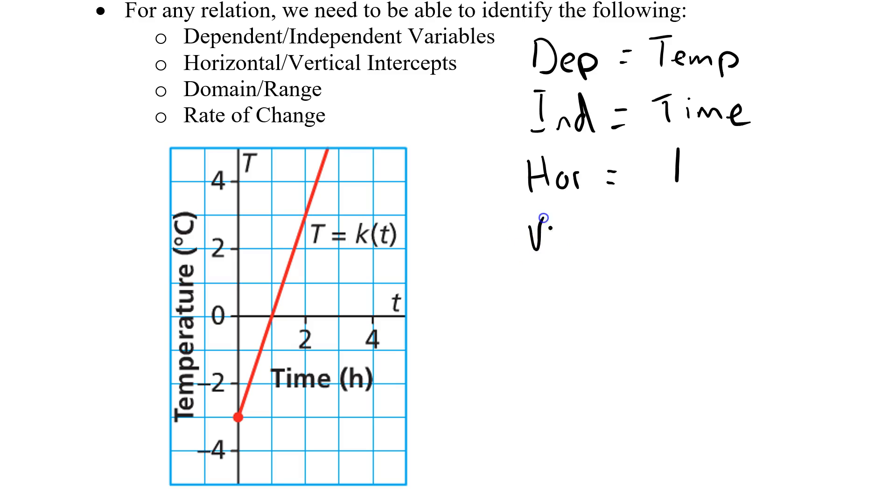Vertical intercept. Well, if our x is 0, where does our line cross the y-axis? And it's right there. So this is the point negative 3.